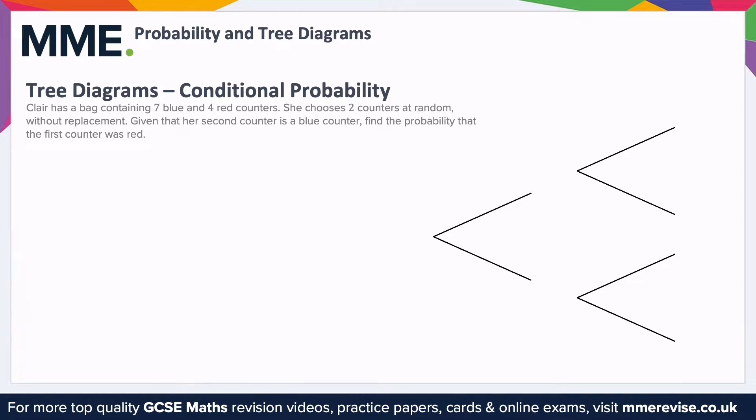Finally, tree diagrams can be used to find conditional probabilities. In this example, Claire has a bag containing seven blue counters and four red counters. She chooses two counters at random without replacement. Given that her second counter is a blue counter, find the probability that her first counter was red.